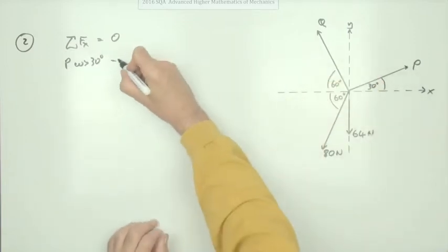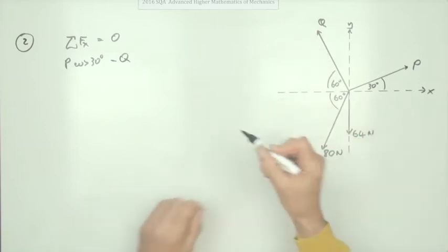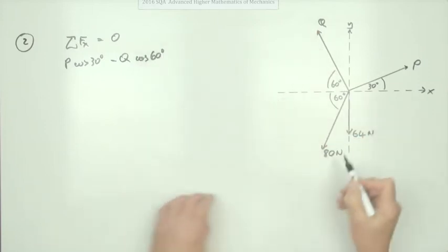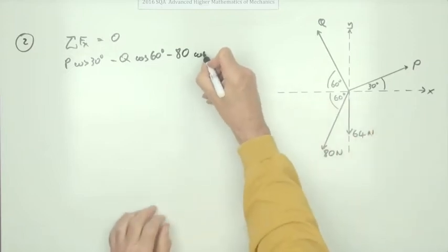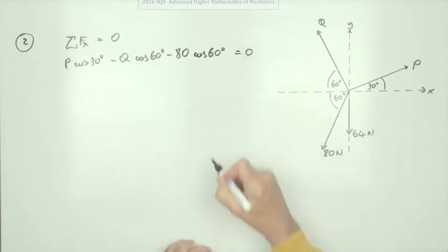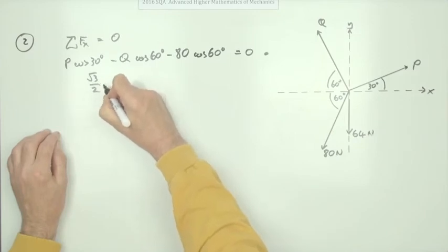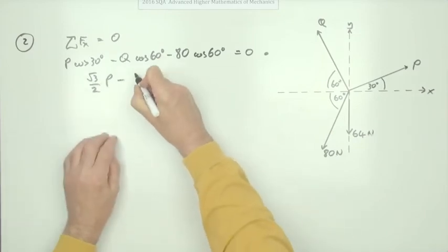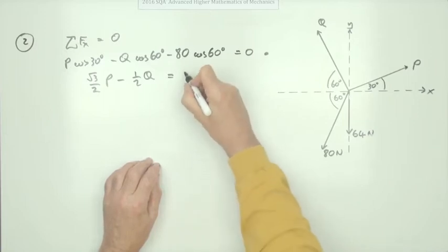Q is acting against it, so it's minus Q. Not all of Q, just this part of it, the cos of 60. And 64's not in it at all because it's perpendicular to the direction. So that should come to zero, and that in fact is the first mark for resolving in the direction X. Now I can tidy up these parts. So the cos of 30 is root 3 upon 2. So root 3 upon 2 P minus the cos of 60 is a half, minus a half of Q equals, cos of 60 is a half and a half of 80 is 40.